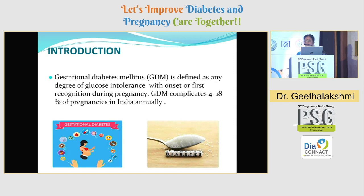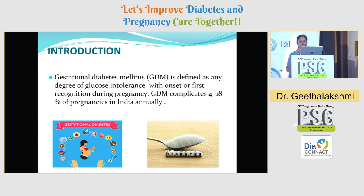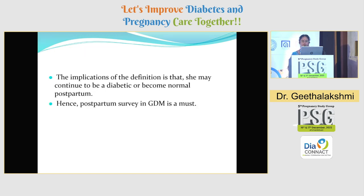As you all know, gestational diabetes mellitus is defined as any degree of glucose intolerance with onset or first recognition during pregnancy. GDM complicates 4 to 18% of pregnancies in India annually. The implication of this definition is that she may continue to be diabetic or become normal postpartum. Hence, postpartum survey in GDM is a must.